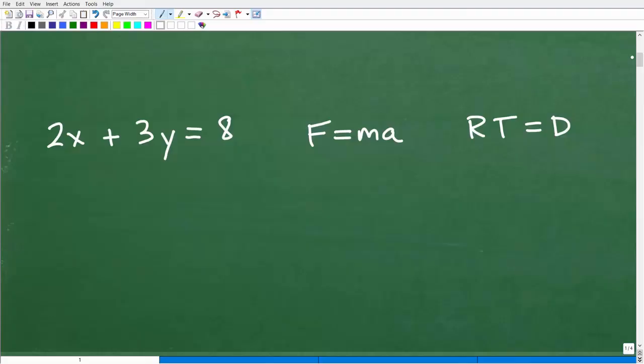So again, what we're talking about here is solving for a specific variable when there's multiple variables in an equation. So here we have an equation of a line, and this is in standard form: 2x plus 3y is equal to 8. What if I told you to rewrite this equation in terms of y? Can you do that?